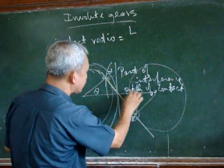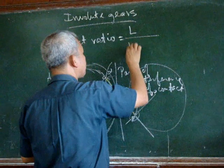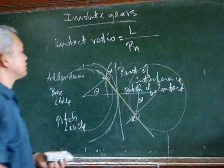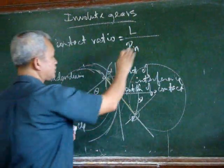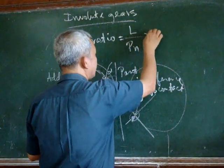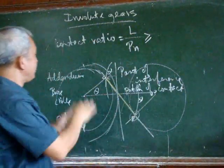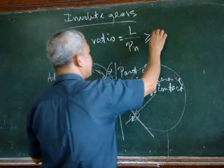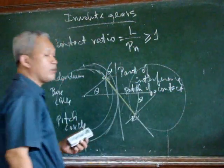Length of the path of contact over the normal pitch. And for the operation of gears, the operation of gears, it must be greater than or equal to one.